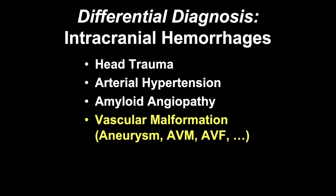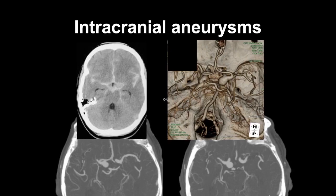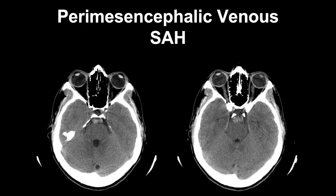Another important cause is aneurysm. Here we see very diffuse subarachnoid hemorrhage in the interhemispheric fissure, bilateral sylvian fissures, and basilar cistern, caused by a large supraclinoid internal carotid artery aneurysm on the right side. Before moving on, I want to discuss a special subtype of subarachnoid hemorrhage called perimezencephalic venous subarachnoid hemorrhage.